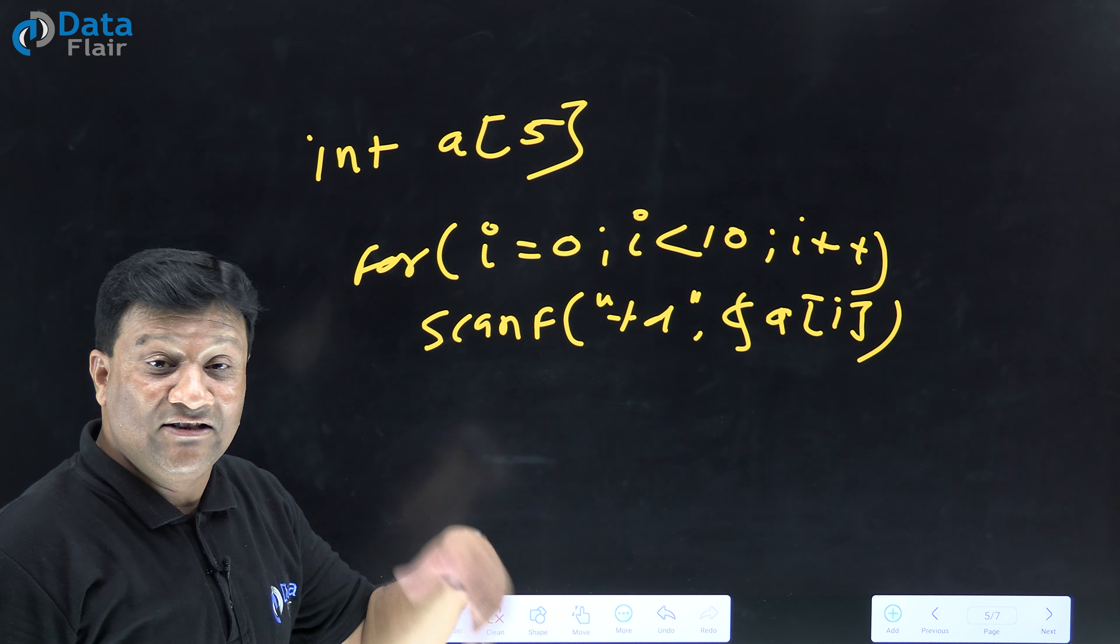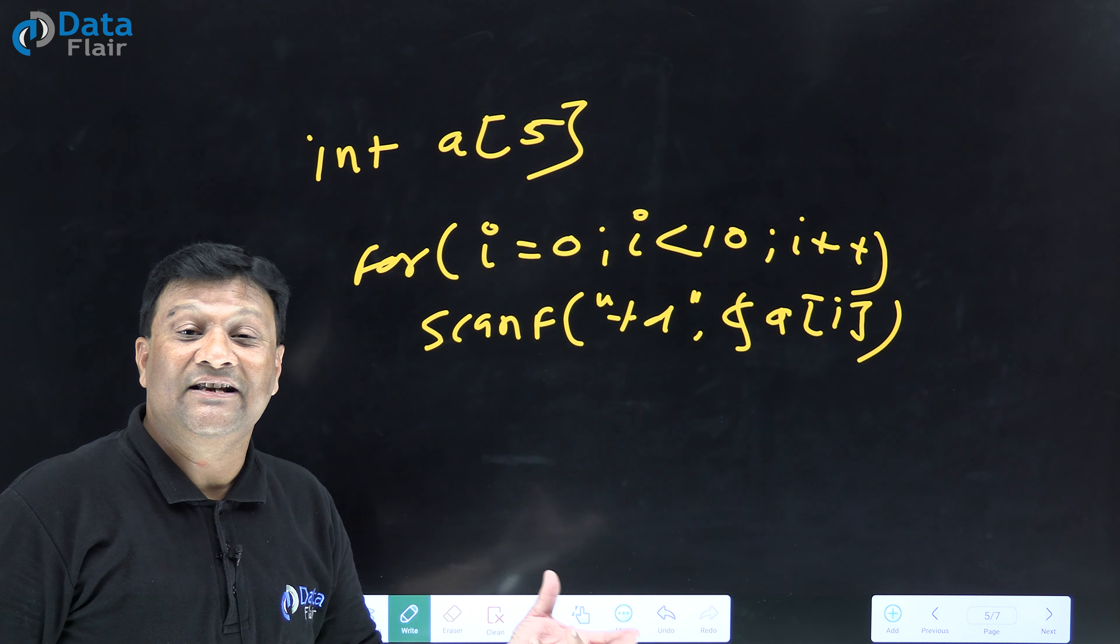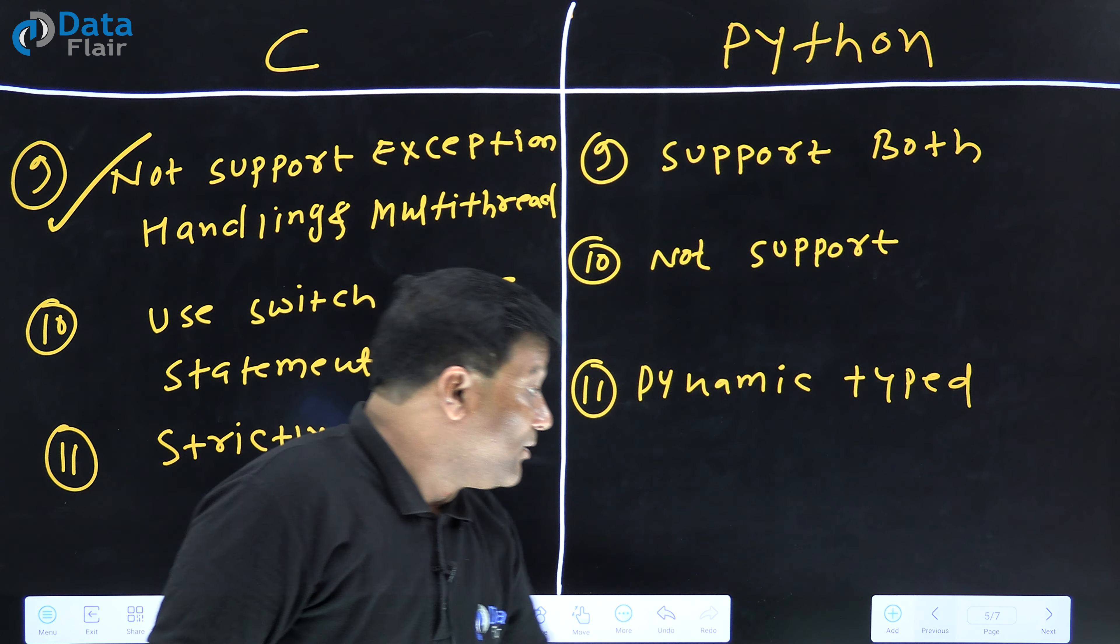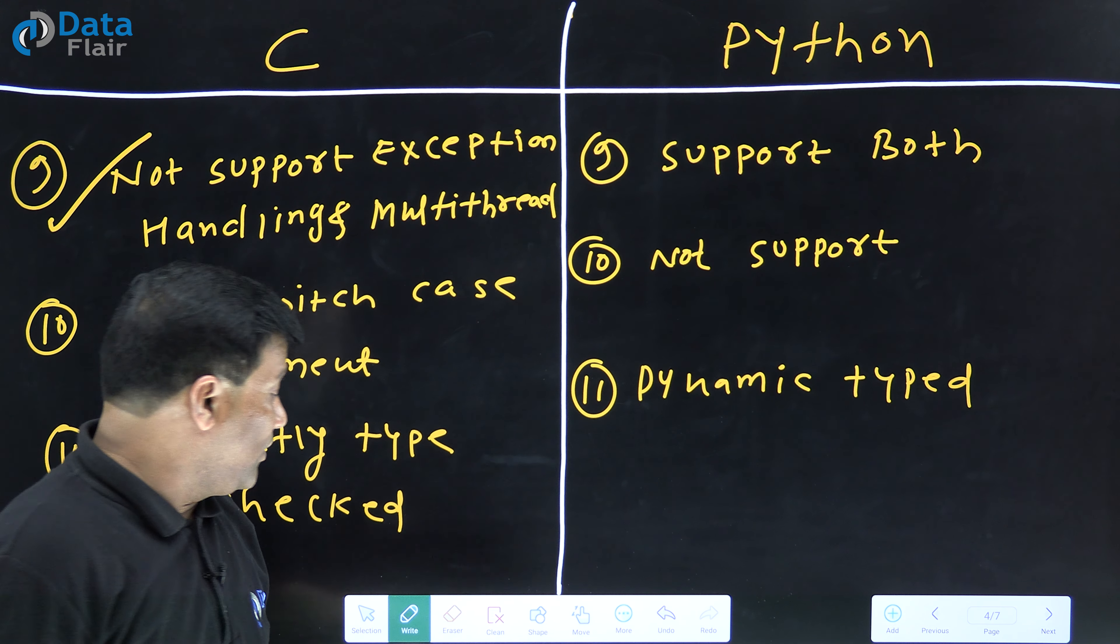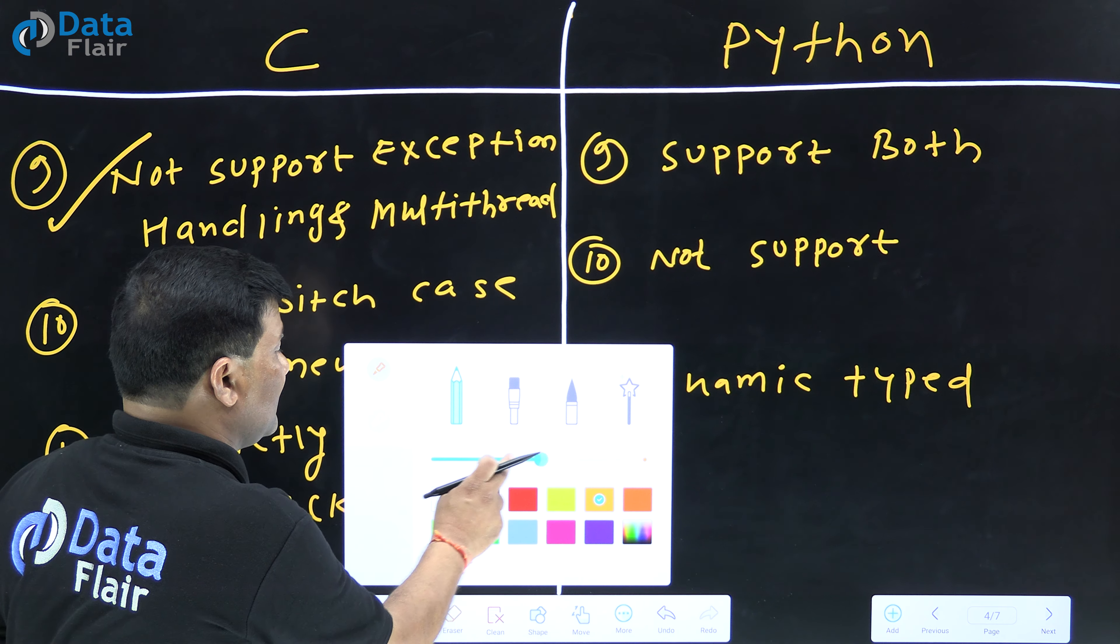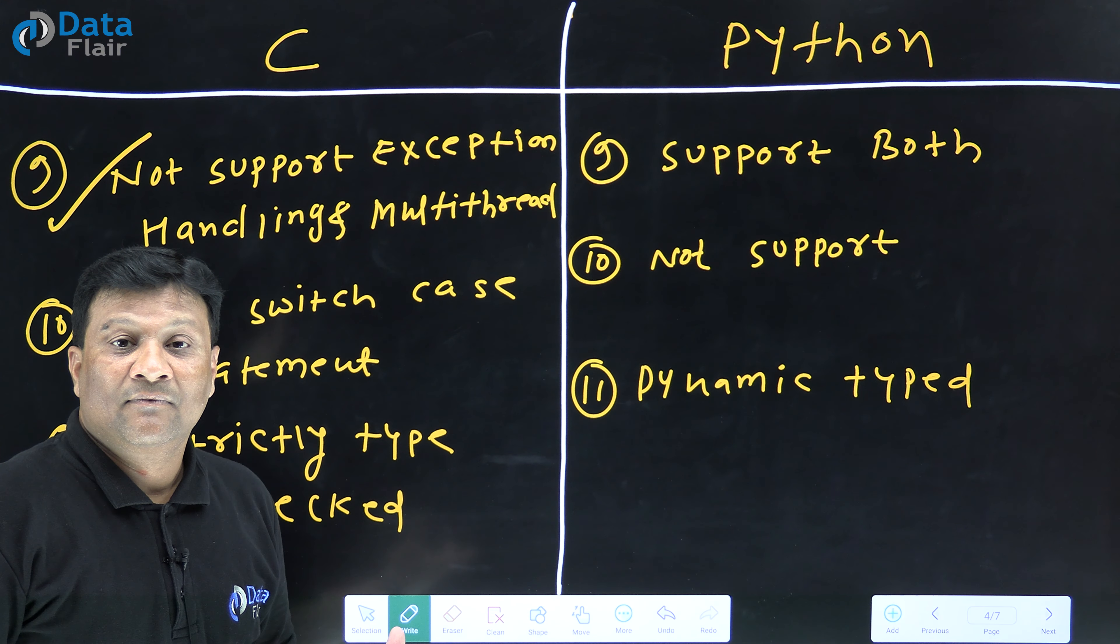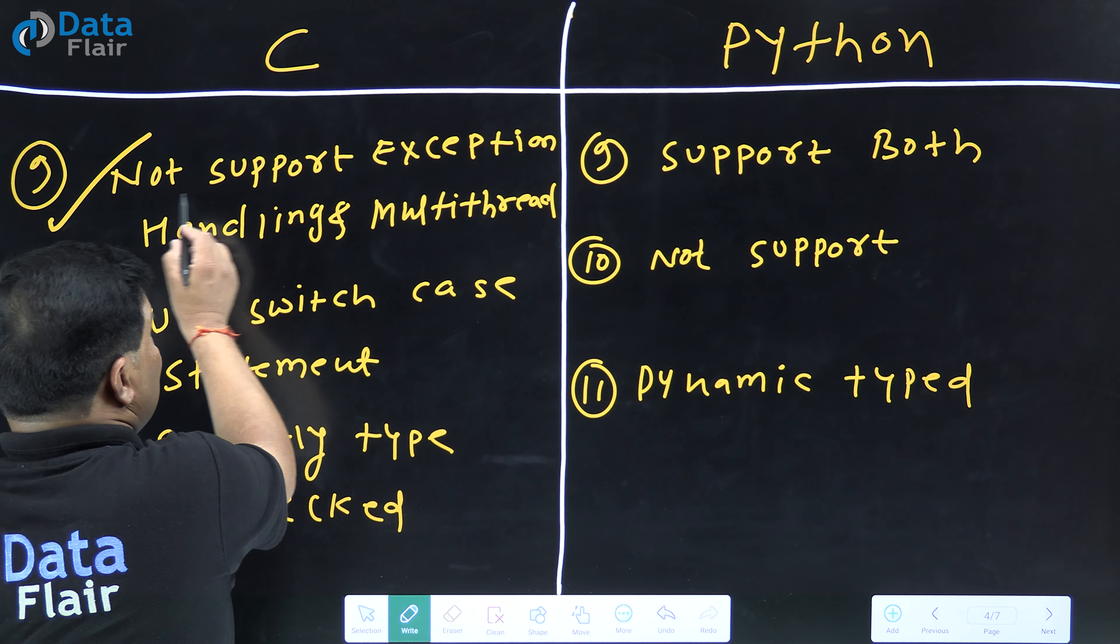Suppose in your code there is no error here. But if you cross the array limit by entering more elements, there is no runtime error checking concept in C. C doesn't have runtime error checking concept, so C doesn't have exception handling concept because exception handling is about catching errors which occur at runtime.